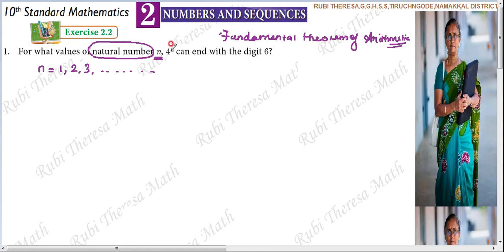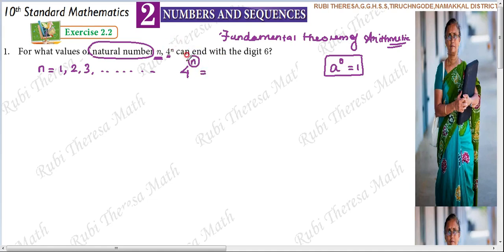Because if N equals 0, then 4 to the power 0 equals 1. That's why we start from 1. The question is: for what values of N does 4 to the power N end with the digit 6?